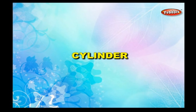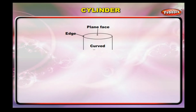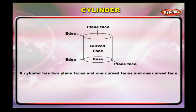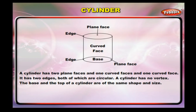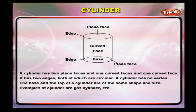Cylinder. A cylinder has two plain faces and one curved face. It has two edges, both of which are circular. A cylinder has no vertex. The base and the top of a cylinder are of the same shape and size. Examples of a cylinder are gas cylinders, etc.